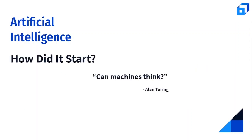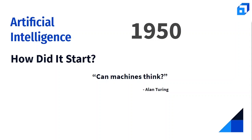AI is not a new technology. It all started with the simple question: 'Can machines think?' — asked by mathematician Alan Turing in 1950. Alan Turing was the man behind decoding the Nazi encryption machine called Enigma, which led to the victory of the Allied forces in World War II.